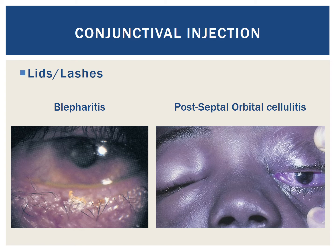Next, we will review some of the common and salient etiologies of conjunctival injection, starting with pathology of the lids and lashes. On the left is an image of blepharitis, which is an inflammatory condition affecting the eyelid margin that causes flaky debris to build up on the lashes, which irritates the conjunctiva. On the right is an image of post-septal orbital cellulitis, which is inflammation of soft tissues of the eyelid extending beyond the orbital septum posteriorly. In this case, the conjunctiva is red due to bacterial sinus infection invading the deeper soft tissue of the eye.